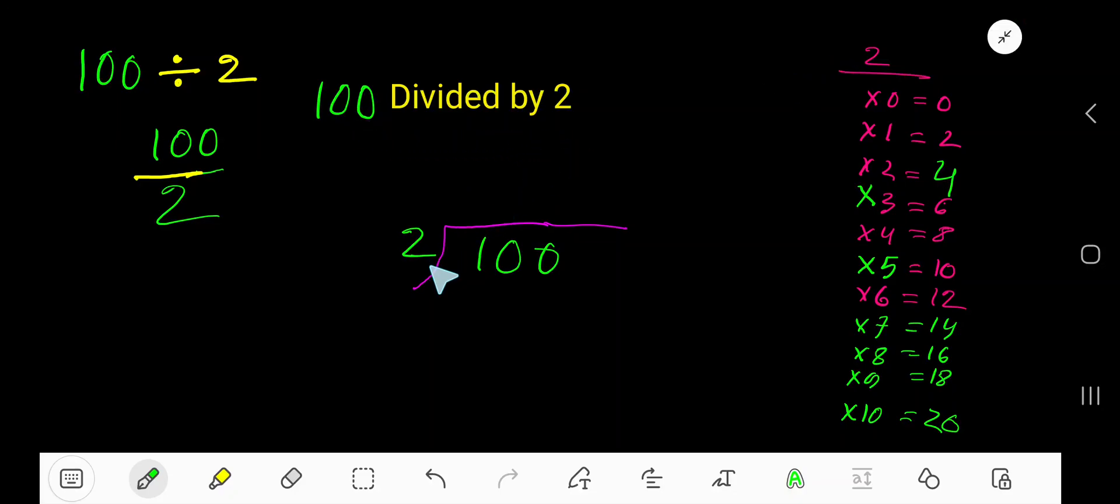100 divided by 2. Here 2 is a divisor, so we need the multiplication table of 2. 2 times 0 is 0, 2 times 1 is 2, 2 times 2 is 4, 2 times 3 is 6.